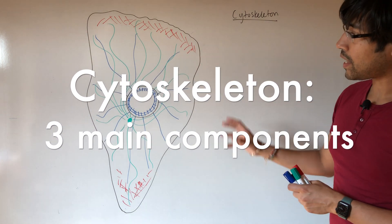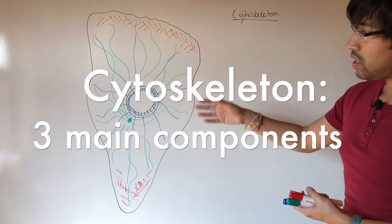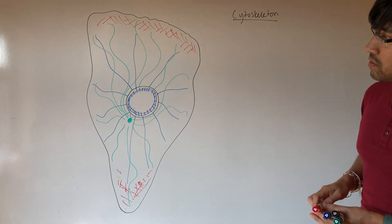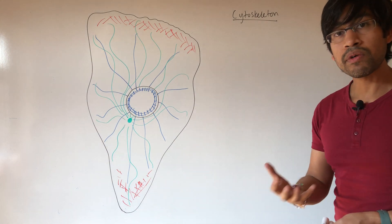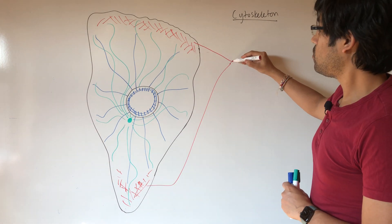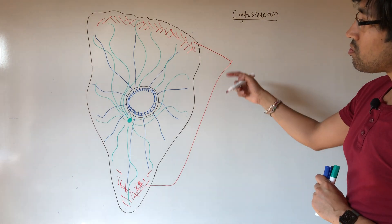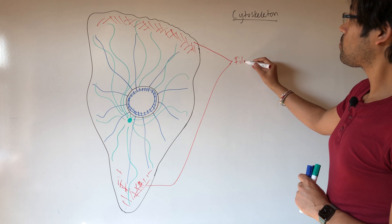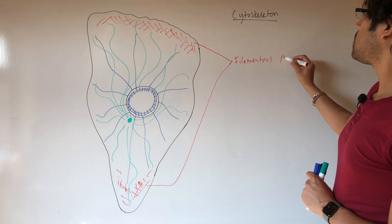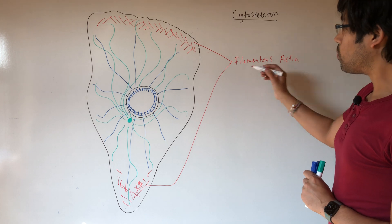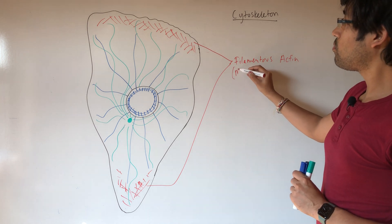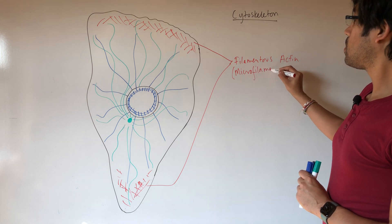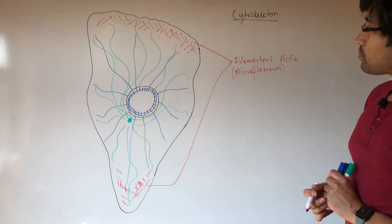So now let's look over here at the components of the cytoskeleton. This is not just a pretty confusing diagram, but it is in fact a summary of the key components that we are going to look at. First one, so we'll look at these in order of size. In red, we have the filamentous actin network. This is also called the microfilaments.